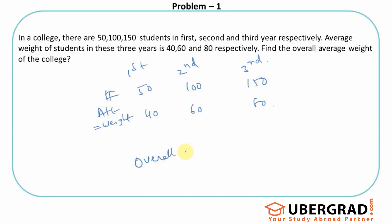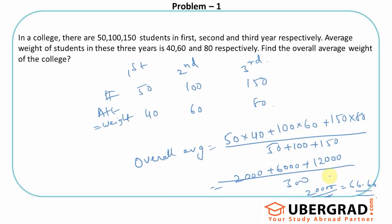So they're asking us to answer what is the overall average. As we said, overall average would be 50 into 40 plus 100 into 60 plus 150 into 80, divided by the numbers 50 plus 100 plus 150. So that is 2000 plus 6000 plus 12000 by 300.